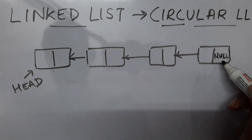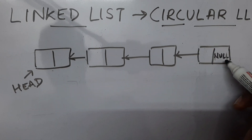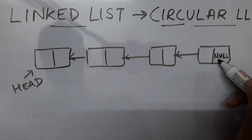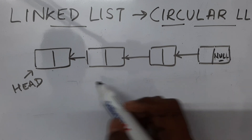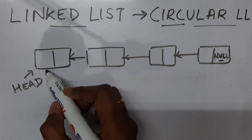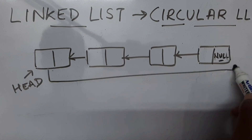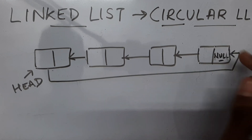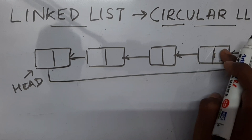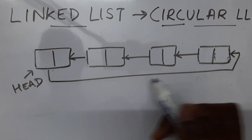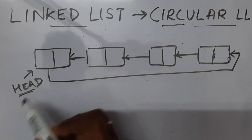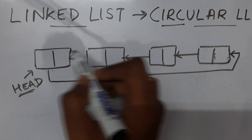In a regular linked list, the last node will not have any address — it is going to have null in the address part. What we are going to do is put the address of the first node in the last node. So null will be gone, and the address part will be storing the address of the first node. In this way, this becomes circular.